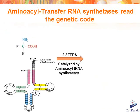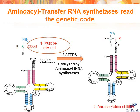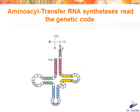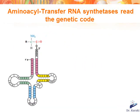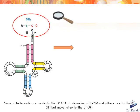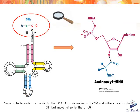This enzyme catalyzes a two-step reaction. First, the carboxyl function of the amino acid must be activated by adenylation. Then the activated amino acid can be attached by its carboxyl function to the 3'OH of adenosine of tRNA. This is the aminoacylation of tRNA.